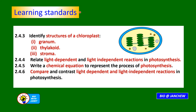The learning standards for this lesson are as follows. 2.4.3: identify structures of a chloroplast — granum, thylakoid, and stroma. 4.4: be able to relate light-dependent and light-independent reactions in photosynthesis. These are the two stages of photosynthesis. 5.4: be able to write a chemical equation to represent the process of photosynthesis. And lastly: compare and contrast the light-dependent and light-independent reactions in photosynthesis.